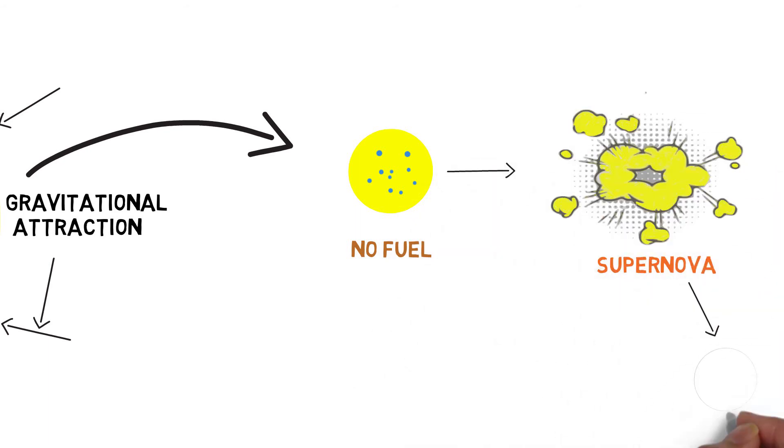What's left over after a supernova is a neutron star, the collapsed core of a star, or the star can become a black hole if it has sufficient mass.